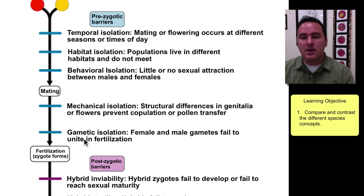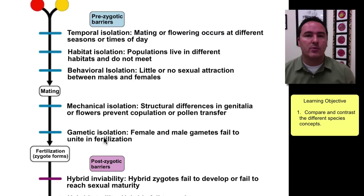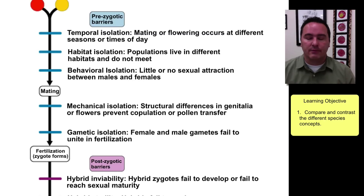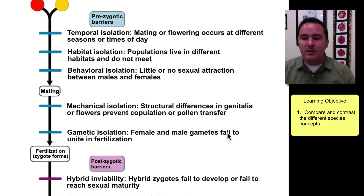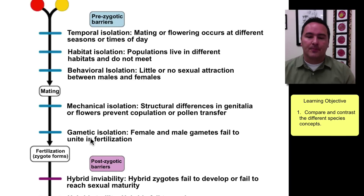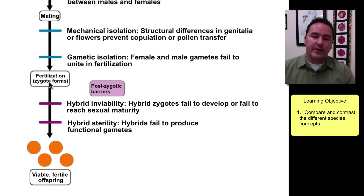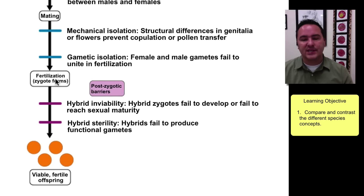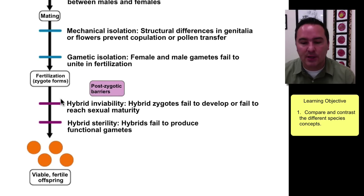Another type of prezygotic barrier that can occur after mating is gametic isolation. Even if copulation occurred and sperm come in contact with the eggs, it may be that they fail to actually unite in a fertilization event.